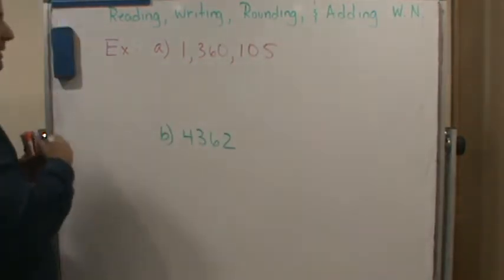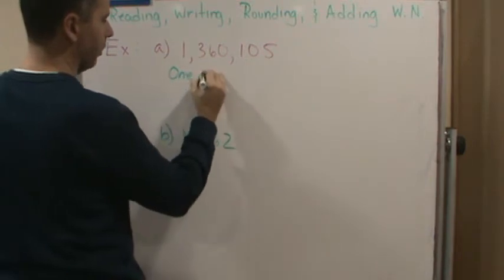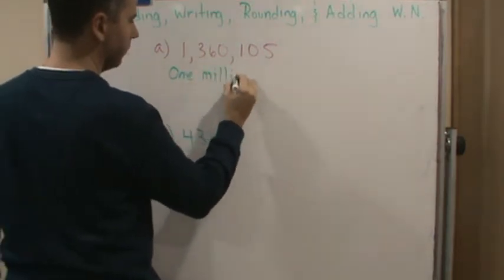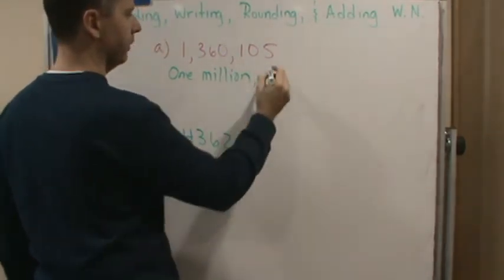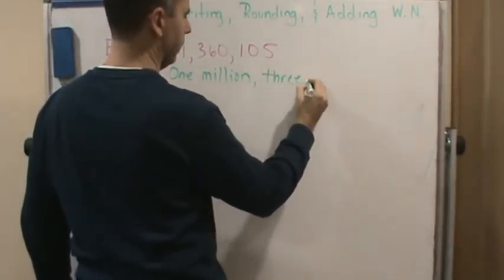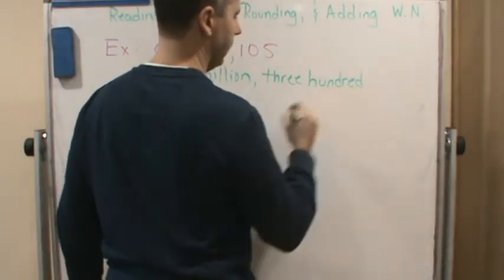Okay, so that's exactly what we write. So we write one million, right, one million comma three hundred...